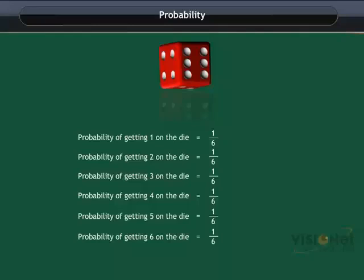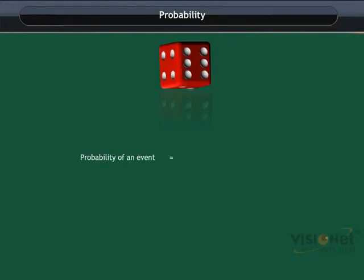So, we can say that the probability of an event is equal to the number of favorable outcomes upon the total number of outcomes. For example, consider the event of getting an even number on the dice. The favorable outcomes are...